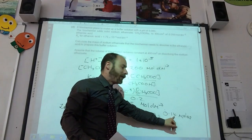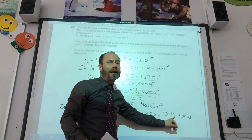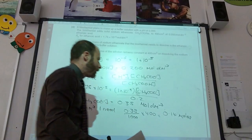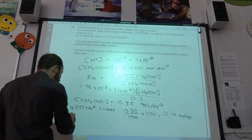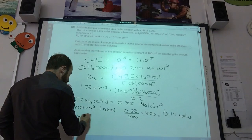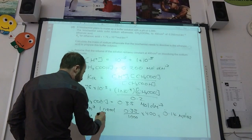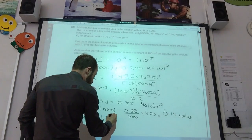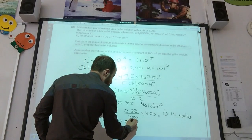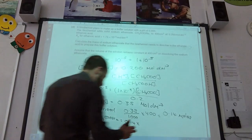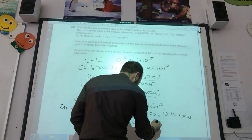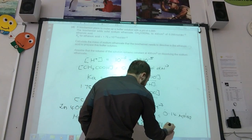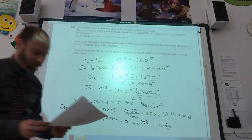The final step: find out how many moles, how do I convert that into a mass of sodium ethanoate? Moles times molar mass. Mass of sodium ethanoate is equal to 0.14 times the molar mass of ethanoate, which is 82. And that comes to 11.5 grams required.